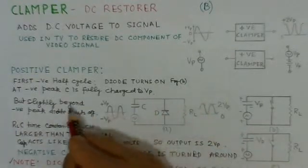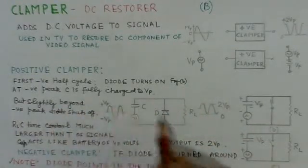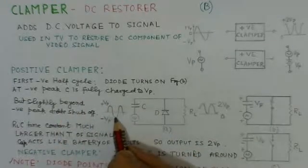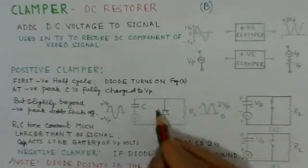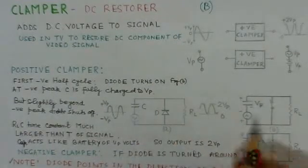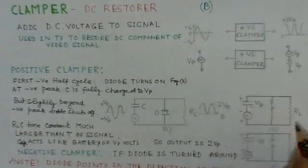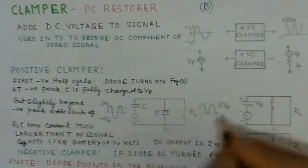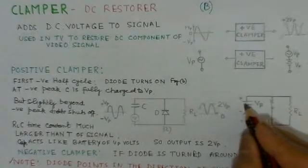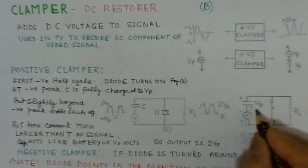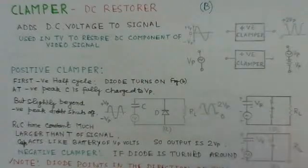So we will start with the negative half cycle. In this negative half cycle, diode will turn on because of the negative peak. At when it is at the negative peak, C will be fully charged. The capacitor would be fully charged and when capacitor and the diode was on, it was conducting, so equivalent circuit like that. Capacitor is fully charged to Vp here with the polarity minus plus.